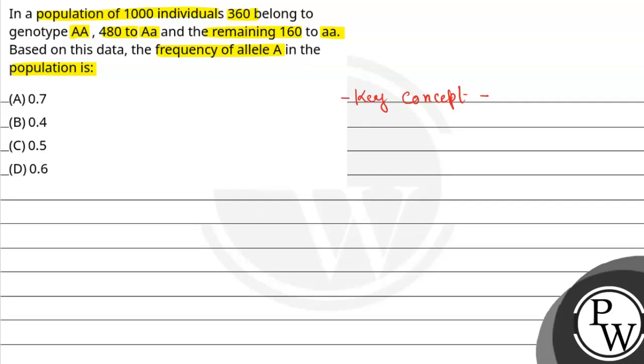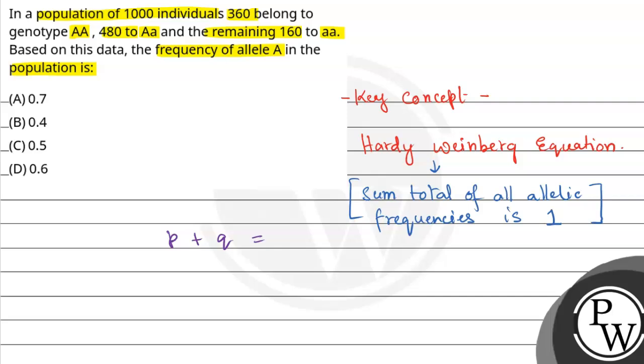Here, the key concept will be Hardy-Weinberg equation. Hardy-Weinberg principle states that sum total of all allelic frequencies is equal to 1, that is constant. If we write this in equation form, then it is p plus q is equal to 1.